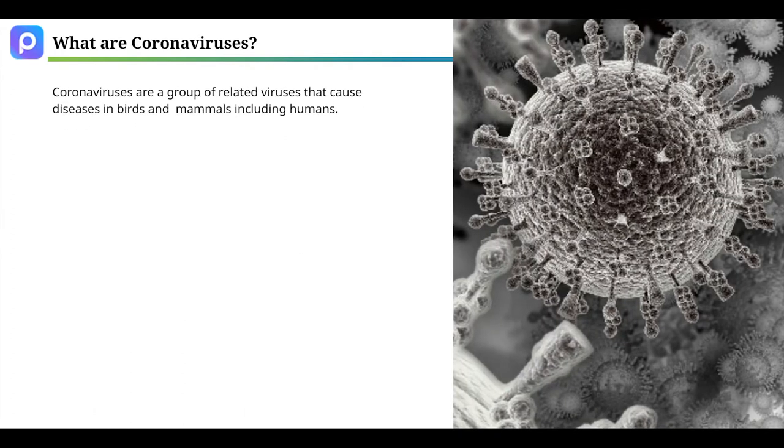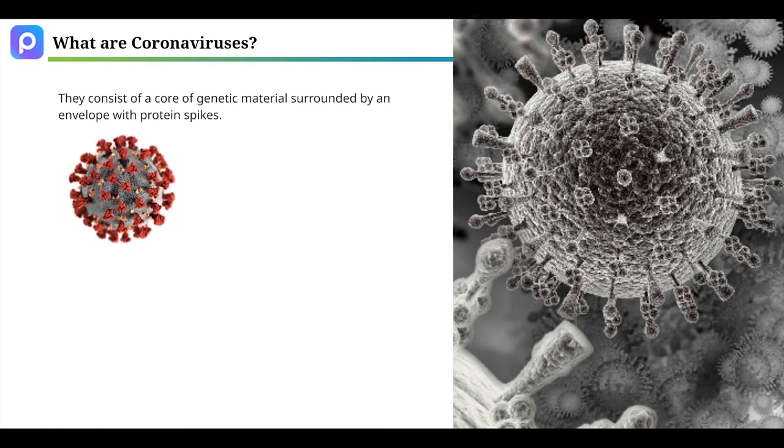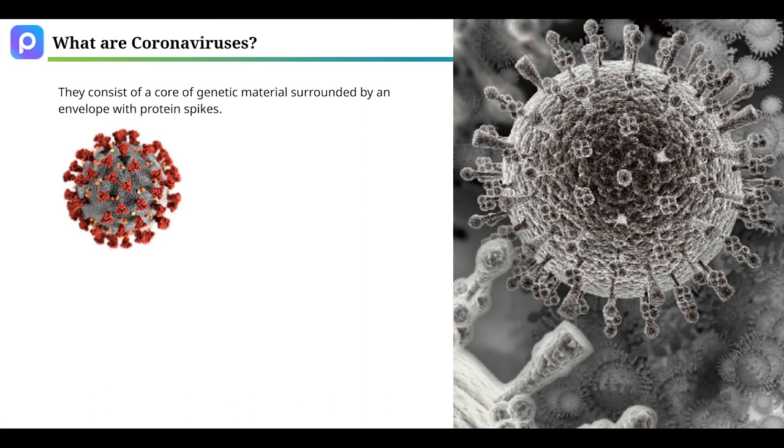Coronaviruses are a group of related viruses that cause diseases in birds and mammals, including humans. They consist of a core of genetic material surrounded by an envelope with protein spikes. This gives it the appearance of a crown. A crown in Latin is called corona and that's how these viruses get their name.